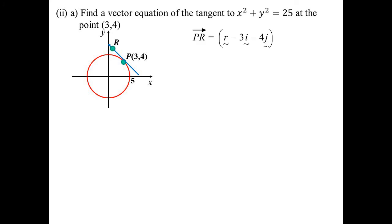So R is some random point on that vector. So I know PR would be head minus tail, R minus 3i minus 4j. I've drawn in radius OP, which would be 3i minus 4j. And the other thing you may recall, radius is perpendicular to the tangent. So I know the dot product of those two vectors are zero.